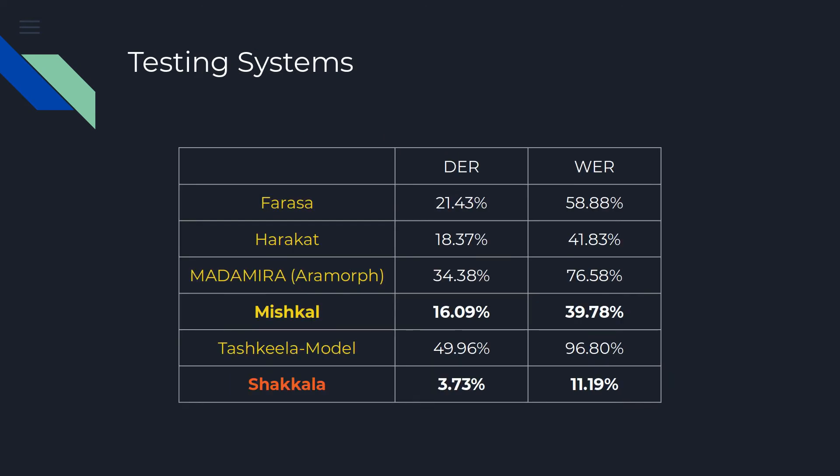A sample from Fadel's paper of the results for each system is shown in this table. We can clearly see that the neural network approach outperforms the traditional rule-based approaches by a significant margin, where Shakkala has 3.73% diacritic error rate and 11.19% word error rate, and the best rule-based system, Mishkal, has 16.09% diacritic error rate and 39.78% word error rate.